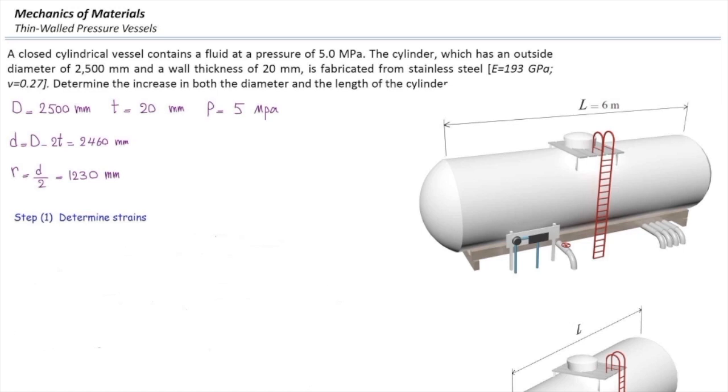Now let me determine strains in longitudinal direction. Strain in longitudinal direction is PD over 4TE, or PR over 2TE, based on if we use radius or diameter, multiplied by 1 minus 2 nu.